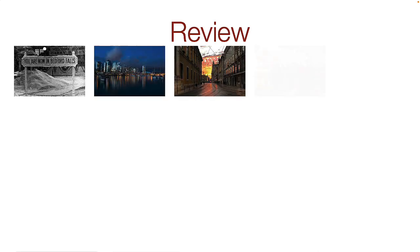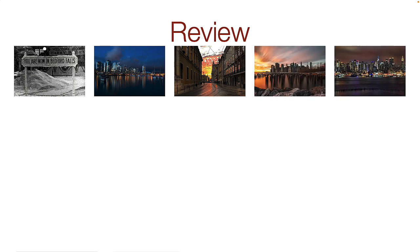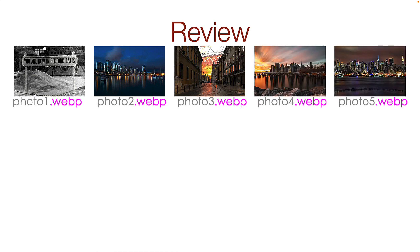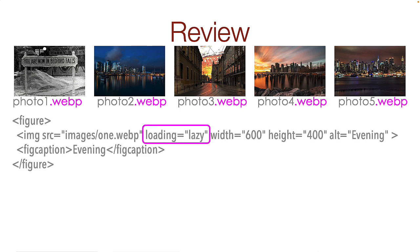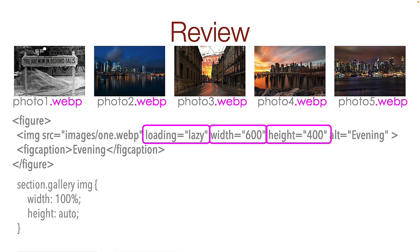First, crop a series of photos the same width and height so they are consistent. Save them in the WebP format. In your HTML code, add an attribute of loading equals lazy. Add a width value and add a height value. In the CSS image selector, set the width to 100% and the height to auto. Let's all be responsible web developers and keep our pages as small as possible.